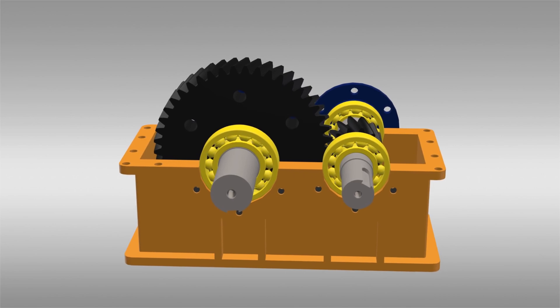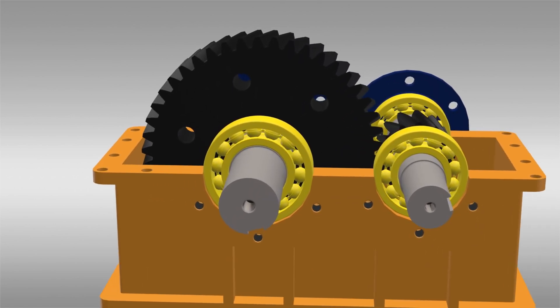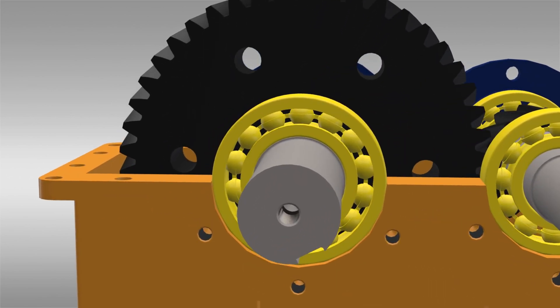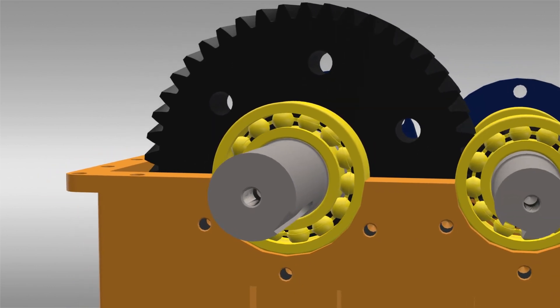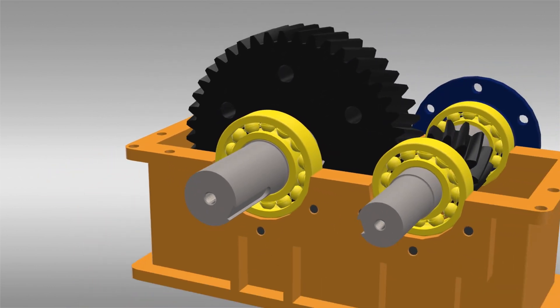When the shaft rotates, the balls roll inside the rings, reducing friction to a minimum. This smooth rolling action helps machines work faster, stay cooler, and run more efficiently.